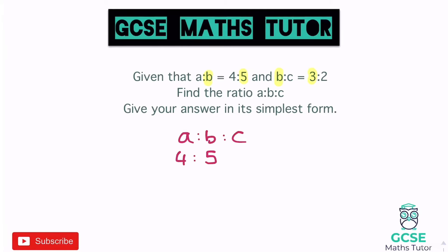In the next one we've got three to two for B to C. I can't just write the three over the top of the five, so I'm going to write it on the next level down — three to two. What I want to do is make that B number the same in both, and as long as it's the same I can slot them together. The lowest common multiple of five and three — we can work that out by doing three times five — and that gives us 15 in this case.